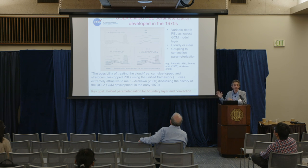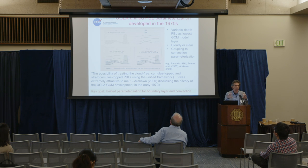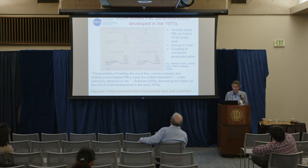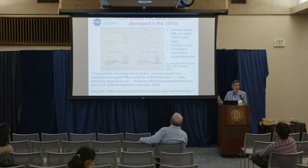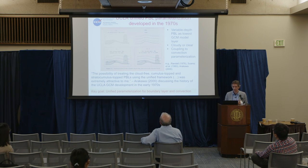The unified parameterization Arakawa is referring to is this sort of variable depth, lowest model level boundary layer parameterization, but it could represent both cloudy and clear boundary layers, and it was done in the context of coupling to a convection parameterization. These are some of the key references about that particular parameterization, which ended up being very successful not only as a parameterization for GCMs but as a way to actually think about the problem.